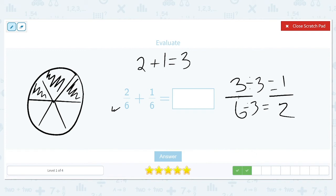So we always need to check. Do my numerator and denominator, do they have any numbers in common? These both had a three. So the answer to two sixths plus one sixth is one half.